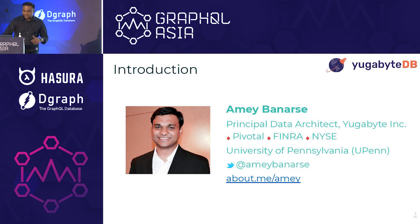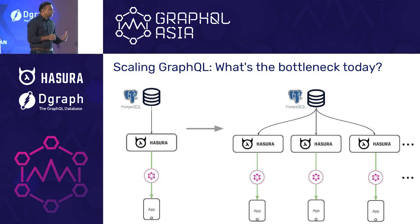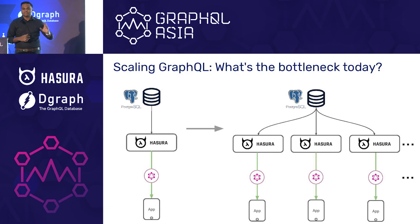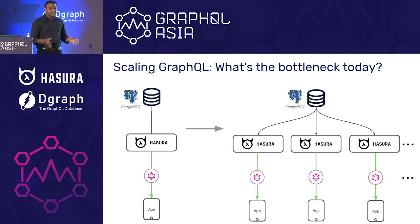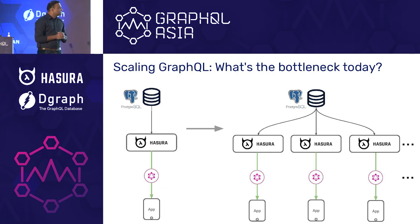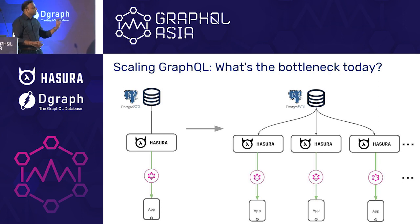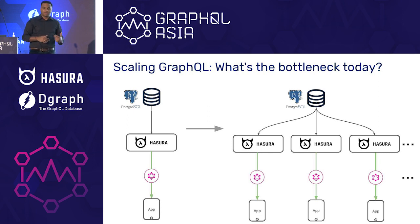GraphQL is something I just picked up maybe six months ago. One of the core bottlenecks in GraphQL always happens to be on the data tier. It's super easy to scale out the Hasura GraphQL layer — you can put it on autoscaler or keep adding Hasura instances as required, and you get a tremendous performance boost from your apps to the GraphQL engine. But the Postgres instance happens to be the bottleneck all the time.